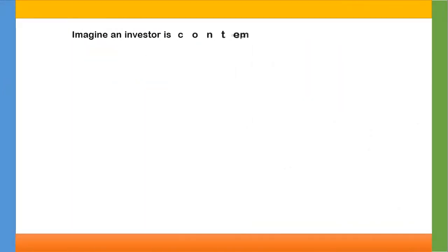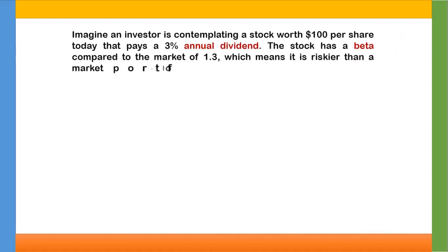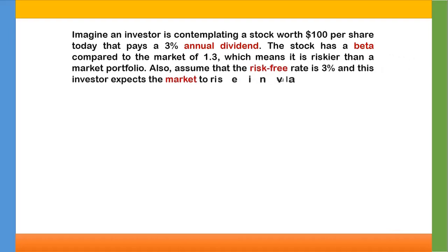So let's do a math. Imagine an investor is contemplating a stock worth $100 per share today that pays a 3% annual dividend. The stock has a beta compared to the market of 1.3, which means it is riskier than a market portfolio. Also assume that the risk-free rate is 3% and this investor expects the market to rise in value by 8% per year.